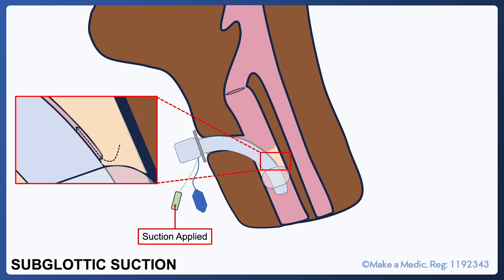We learned about the subglottic suction port earlier when looking at the tracheostomy tube and this is why it's useful. Some people in ITU may develop quite significant secretions from the upper airway that can pool on top of the cuff. These secretions can drip down into the lungs and cause ventilator-associated pneumonia. Regular subglottic mucus clearance can help reduce the risk of patients developing ventilator-associated pneumonias.